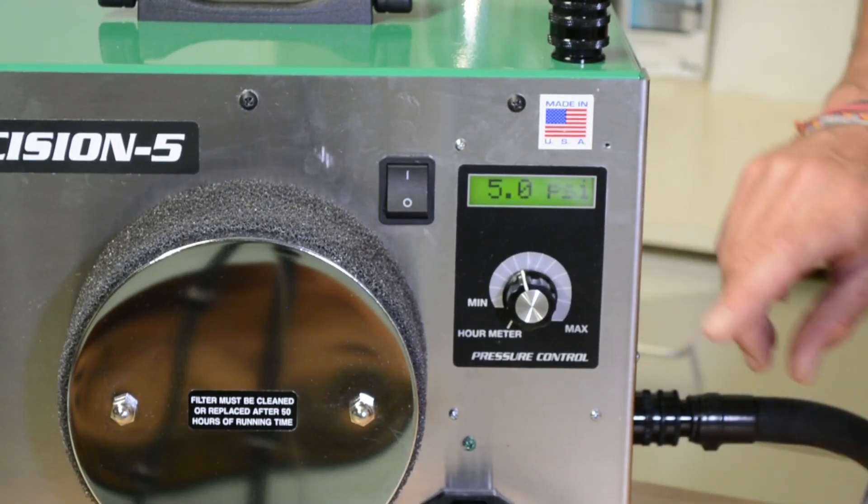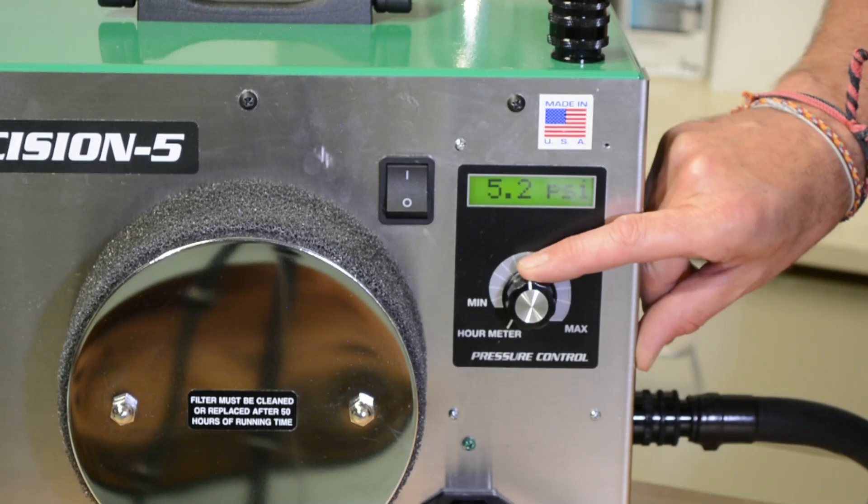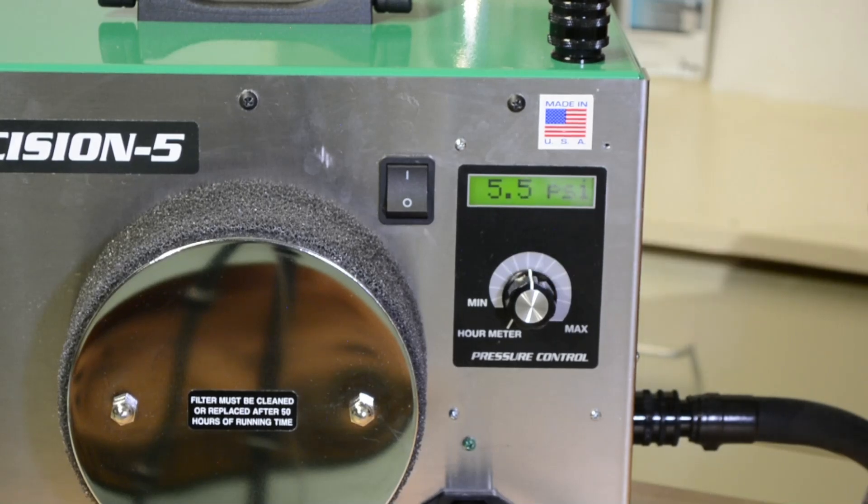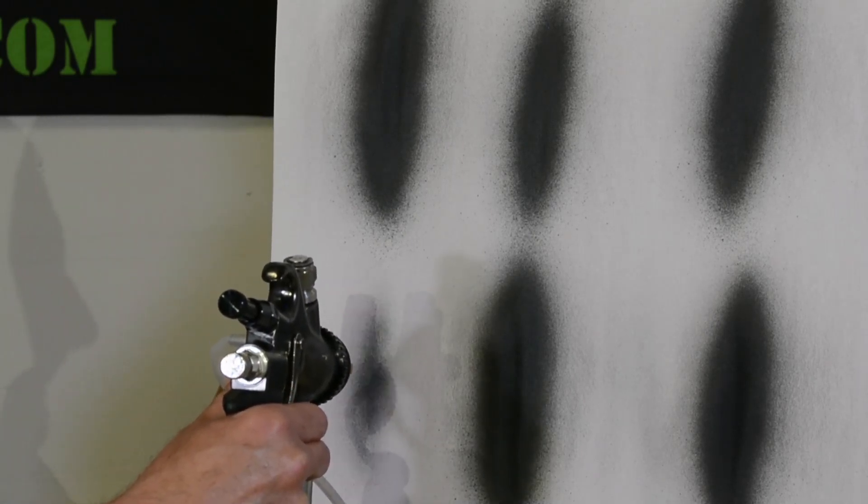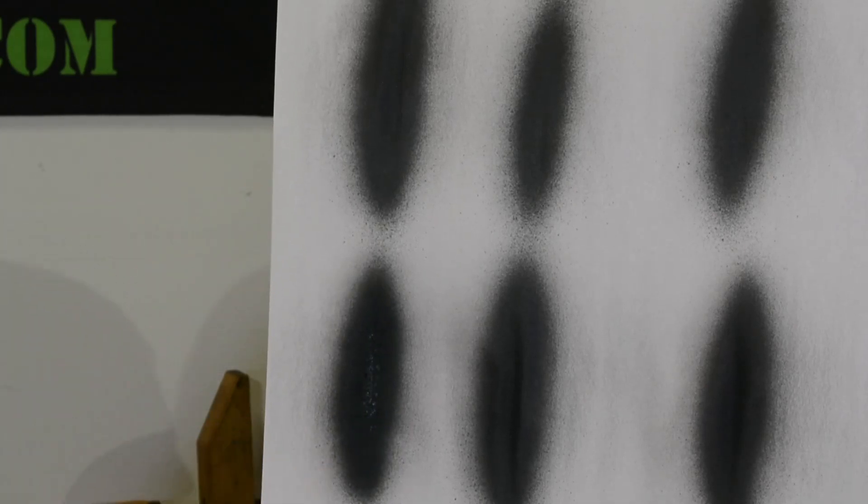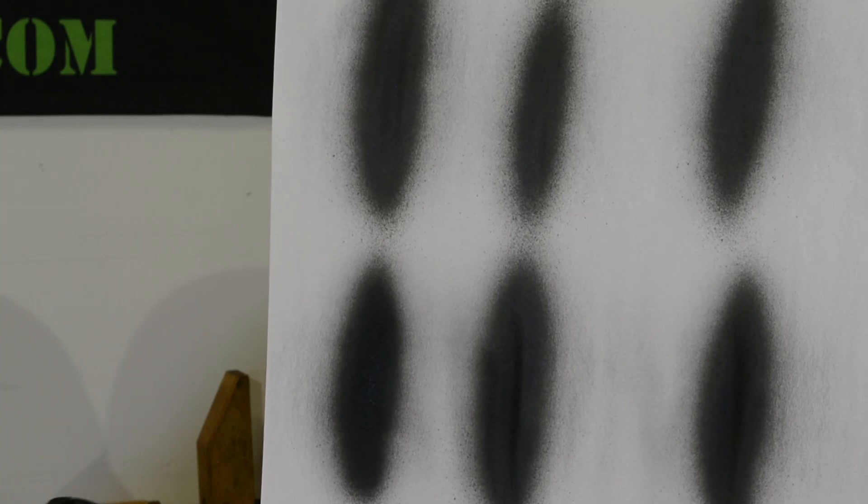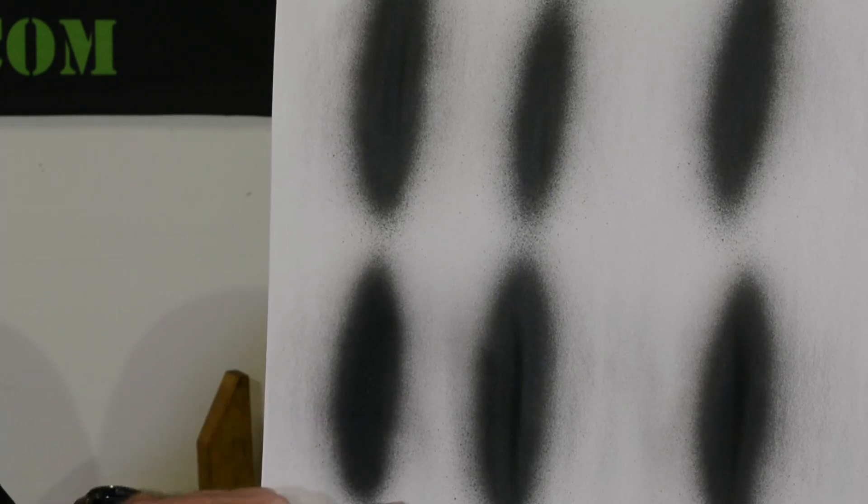Five psi wasn't enough, so let's go up to five and a half. There's five and a half. This is five and a half psi. Let's see what it looks like. It's getting a little better. We still need to get a little bit more. You can still see a little bit here, so I think maybe a little bit more and we should be good to go.